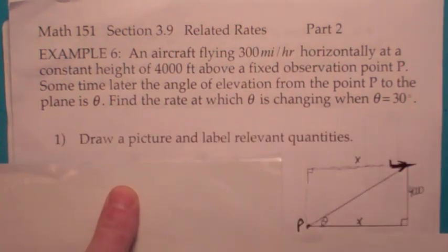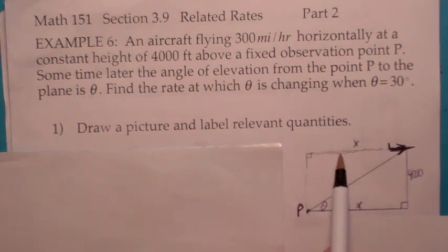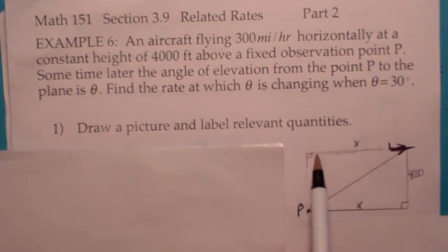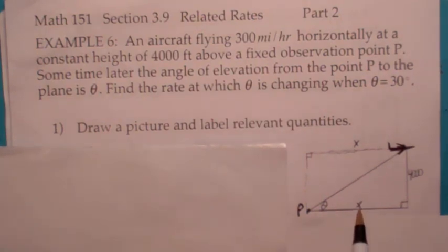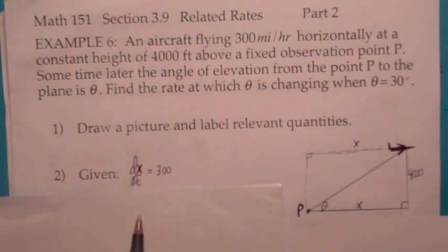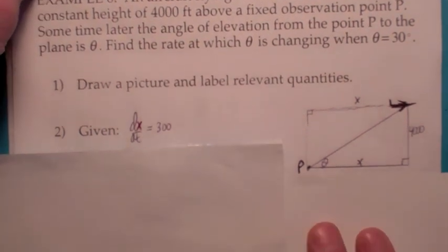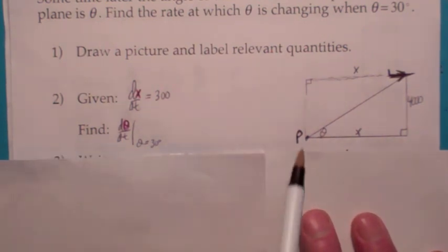So the picture looks kind of like this. The plane flies over this point P, and if x is the path of the plane, they're telling you that dx dt equals 300. You can see from the picture that this distance is also x, so you could think of it in terms of this triangle here. You're given dx dt is 300, and you want to find d theta dt when theta equals 30 degrees.